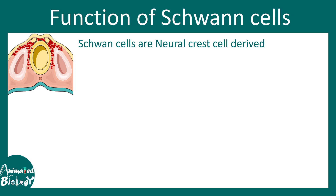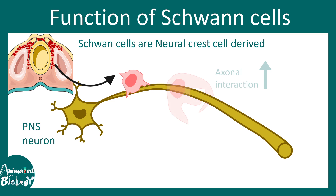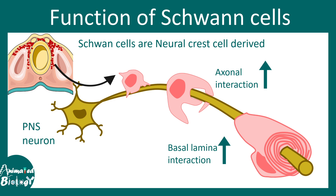Now let's talk about Schwann cell development. Schwann cells are actually developed from the neural crest cells. They have different stages of maturation: first the Schwann cell progenitor, then the immature Schwann cell, and eventually they form mature Schwann cells. Initially there are loose interactions with the axons, then there is strong interaction with the basal lamina, and the Schwann cell starts wrapping around the axon, thereby becoming matured.